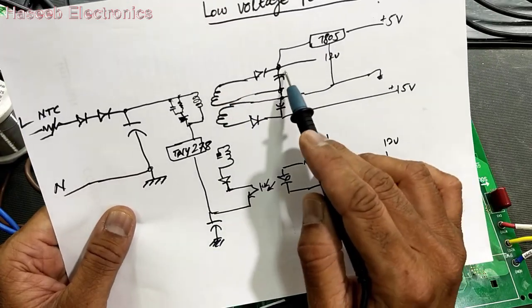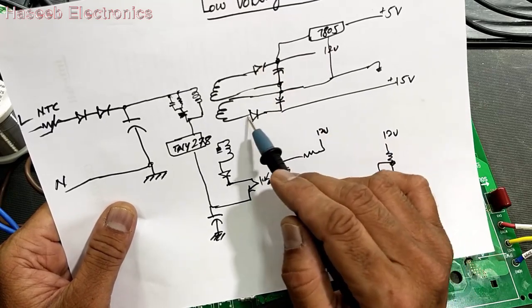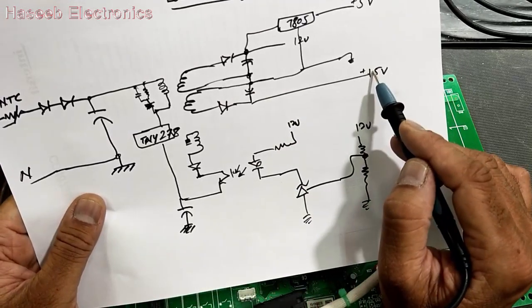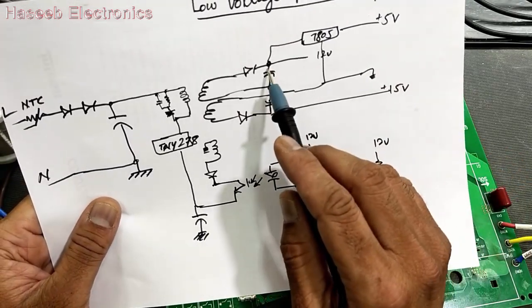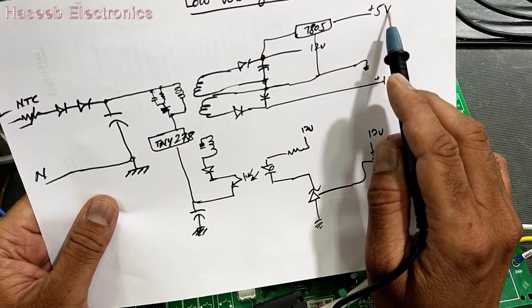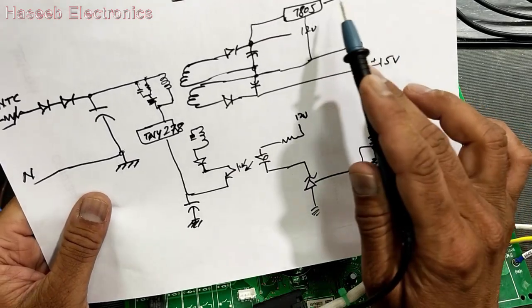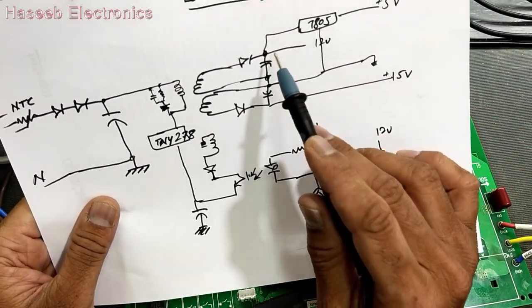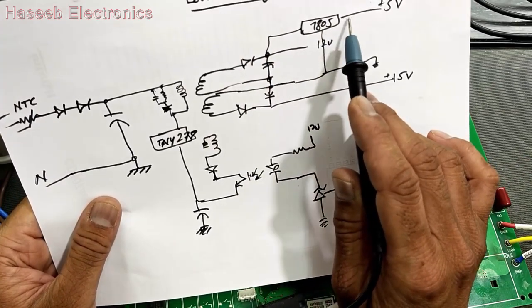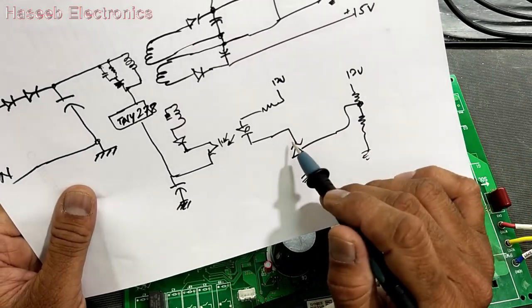In the secondary we have two sections: a 12 volt section with one rectifier and one capacitor, and a second section of 15 volt with a capacitor, giving 15 volt direct output and 12 volt output. Then we have a 7805 IC to get 5 volt. This circuit has a feedback circuit that monitors the 12 volt section, because the 12 volt section is most important as it supplies the processor voltage.